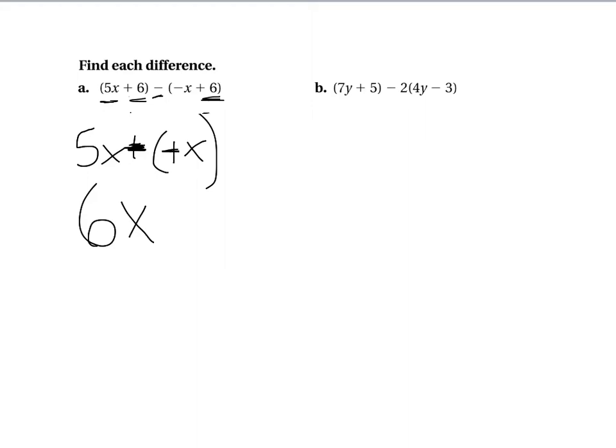6 minus 6. Now you're going to say, well, it's a positive. Yes, it's a positive 6. But we have to keep in mind, this subtraction sign tells us what we're doing. So 6 minus 6 gets me 0. My grand answer is just 6x.